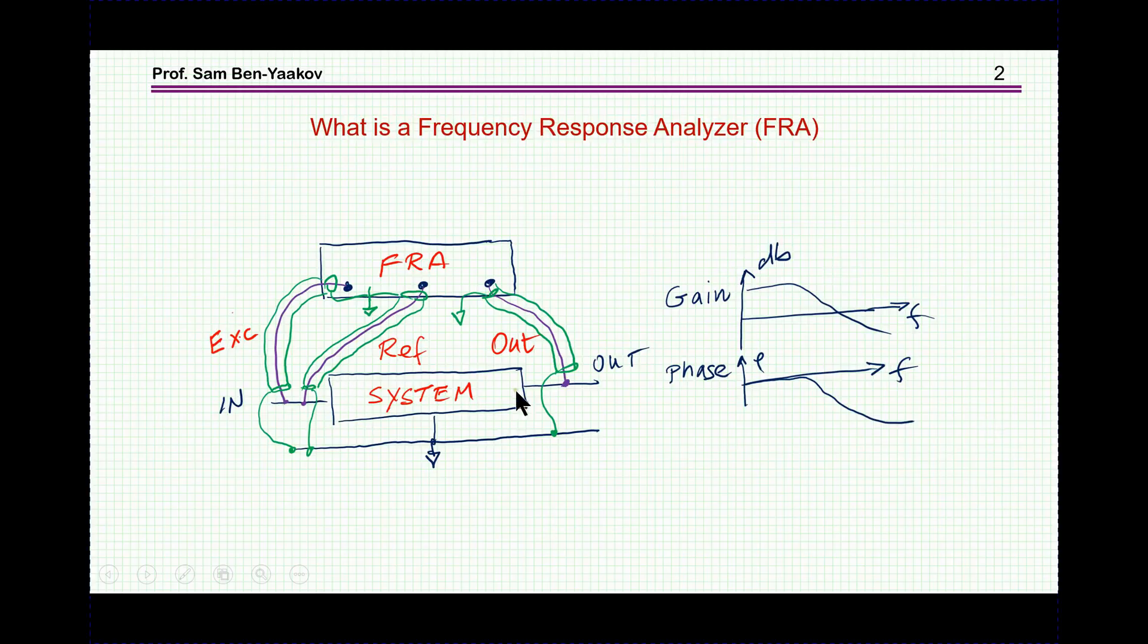Suppose we have a system, there is an input, there is an output, and we would like to get the gain and phase as a function of frequency of this system. So this is the purpose of the frequency response analyzer. It has an excitation here, it's a signal coming in, a signal which is sensed here by the analyzer that's the reference, and then it looks at the output, and then it will sort of sweep the frequency, and will calculate the output voltage over the reference, both for magnitude and phase. This is very useful for filters and many systems.